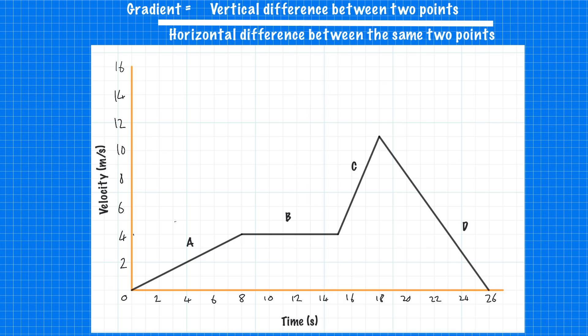So we'll try that again and calculate the acceleration during section C, just to see that a steeper line does mean a greater acceleration. So if we find our start velocity, we have the same point starts at four metres per second and then peaks and goes up to eleven metres per second. So remember the gradient is the vertical difference. So we've got eleven minus four metres per second. And then we need the horizontal distance. So it starts at fifteen and goes to eighteen. So we have eighteen minus fifteen seconds.